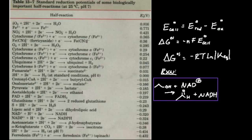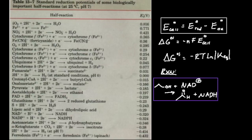The equation for the cell potential is given up here. This table is given as reductions — these are only reduction reactions. Something to memorize: anytime you're going from NAD to NADH, that's a reduction. If you're going from FAD to FADH2, that's a reduction, things like that.